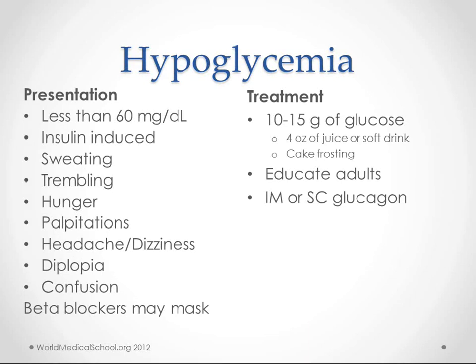Hypoglycemia is when you get less than 60 milligrams per deciliter of sugar. It's almost always caused by insulin in diabetics. You can get sweating, trembling, palpitations, and headaches — all sympathetic signs. That's why we talk about beta blockers being able to mask these symptoms, so watch out for beta blockers in children who are also diabetic. Treatment is glucose — a soft drink or some cake frosting. Have those things on hand wherever people are. If it gets more serious, you can do IM or subcutaneous glucagon.